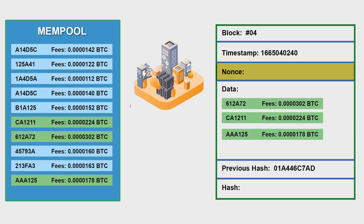The solution is to utilize the remaining time within that one second so the mining pool won't be idle. What the mining pool does is change the block configuration. For example, in this block the data field has three transactions with the highest fees. Let's say the mining pool starts the operation and in 10 milliseconds completes checking the whole 4 billion nonce range — it still has 990 milliseconds left, which needs to be utilized.